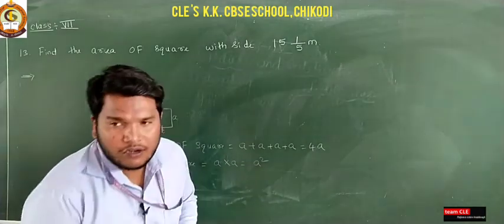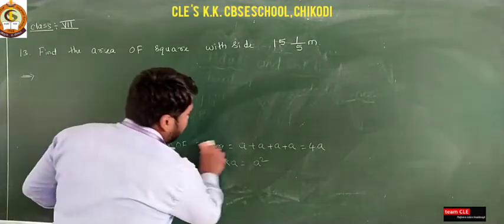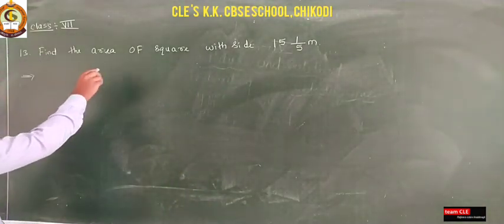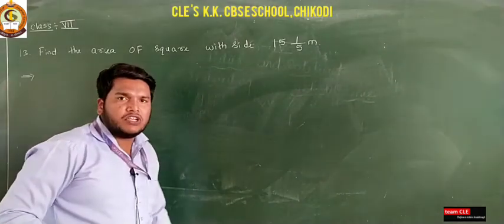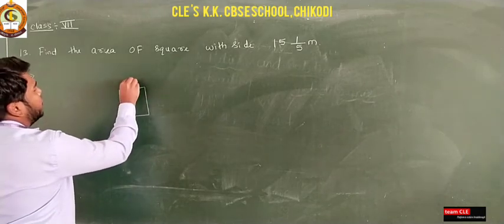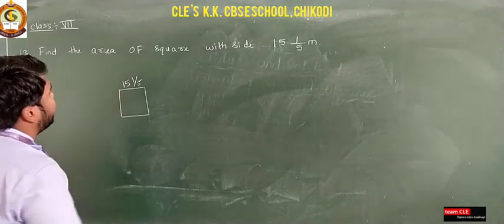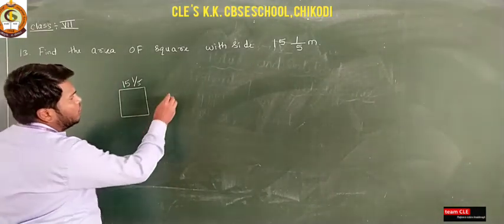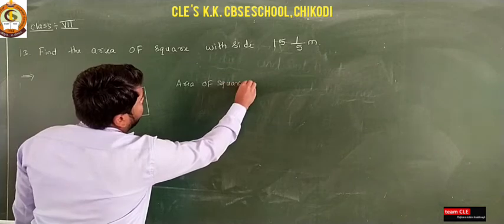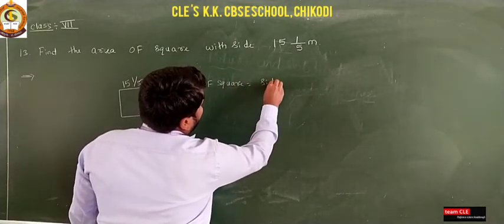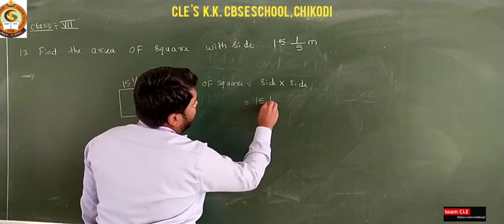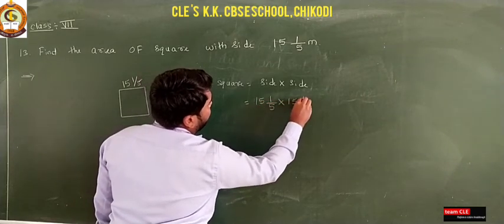In the last class we learnt about perimeter and area of a square. Now this is an applied problem using fractions and decimals. Using the area formula, we solve: find the area of a square with side 15 and 1/5. The side is given as 15 and 1/5, so area of square equals side × side, that is 15 1/5 into 15 1/5.